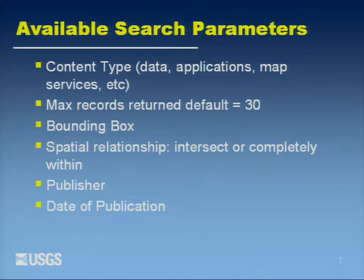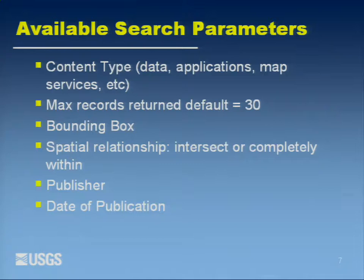You can search — and these are parameters that you can define in that second line of code — on the metadata type, whether it be actual data, map services, or online applications; bounding box; the spatial relationship, whether it be wholly within or an intersect; the publisher; the date of publication; and other parameters. The default maximum return records is 30, though you can redefine that. We've done that in Westchester County so you don't have such an ominous list of records to look at.